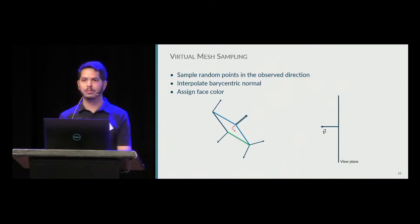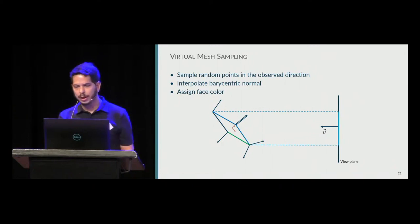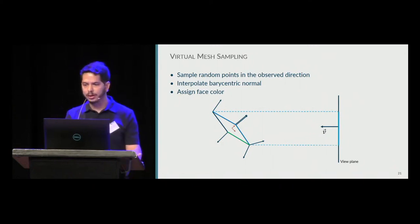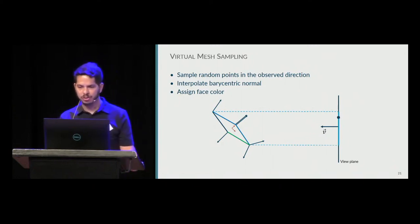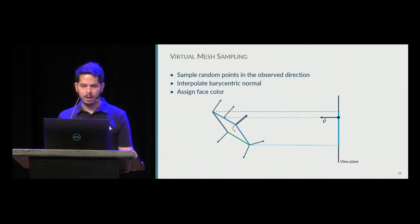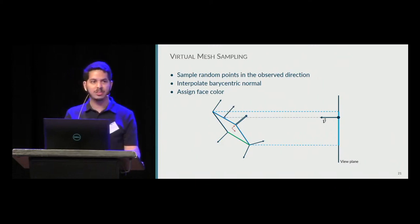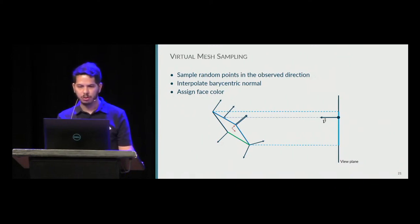Now that we have the shape of the virtual mesh, we need to sample it during rendering. Given a view plane with view direction V, we project the octahedron onto the view plane, randomly pick a point in the projection, and create the corresponding ray. The ray intersection with the virtual mesh gives a normal via barycentric interpolation and a color from the face. We typically shoot 160 rays and shade the voxel accordingly.